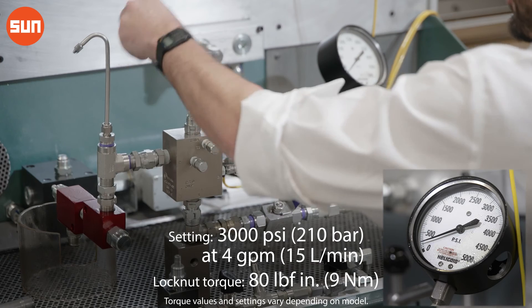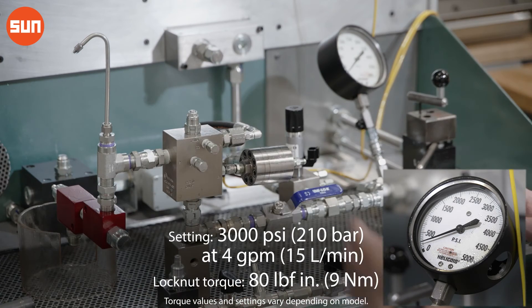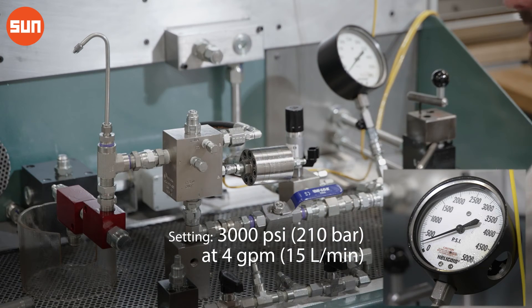Once we've torqued down the adjust screw, we have no need for that anymore and now it's time to verify once again that our crack point is at 3000 PSI.